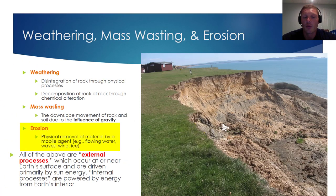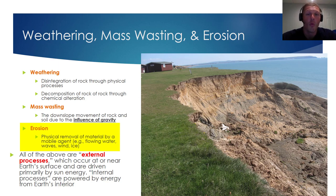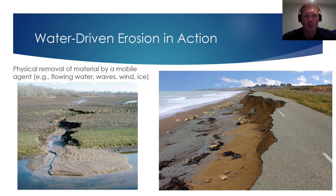The last thing we'll consider is erosion. Erosion is the physical removal of material by a mobile agent. Some examples of mobile agents include flowing water, ocean waves, lake waves, wind, and glacial ice. When we consider erosion we're talking about the movement of sediment or other materials from one location to another.